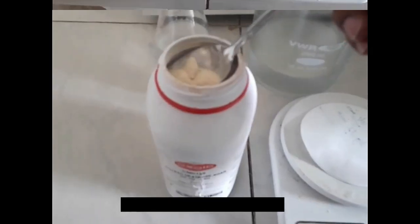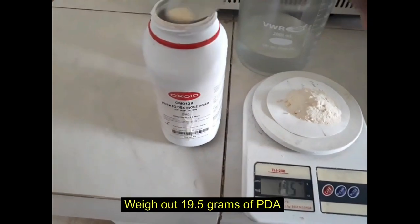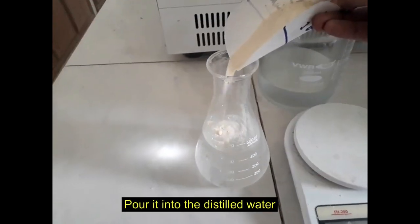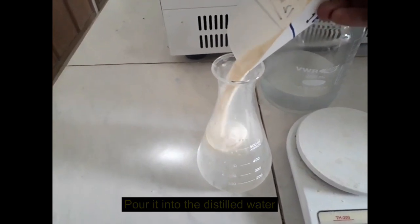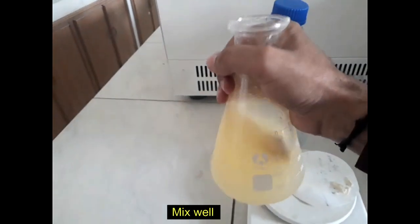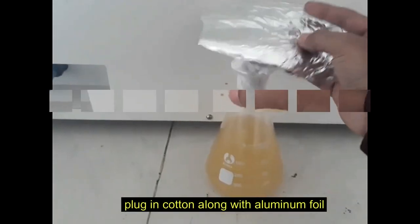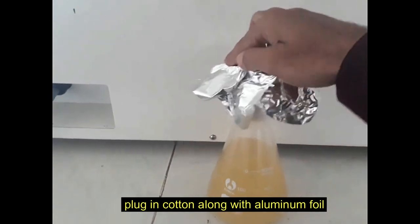Weigh out 19.5 grams of powder PDA and mix it with the distilled water. Mix the solution thoroughly. Plug in the non-absorbent cotton along with aluminum foil.